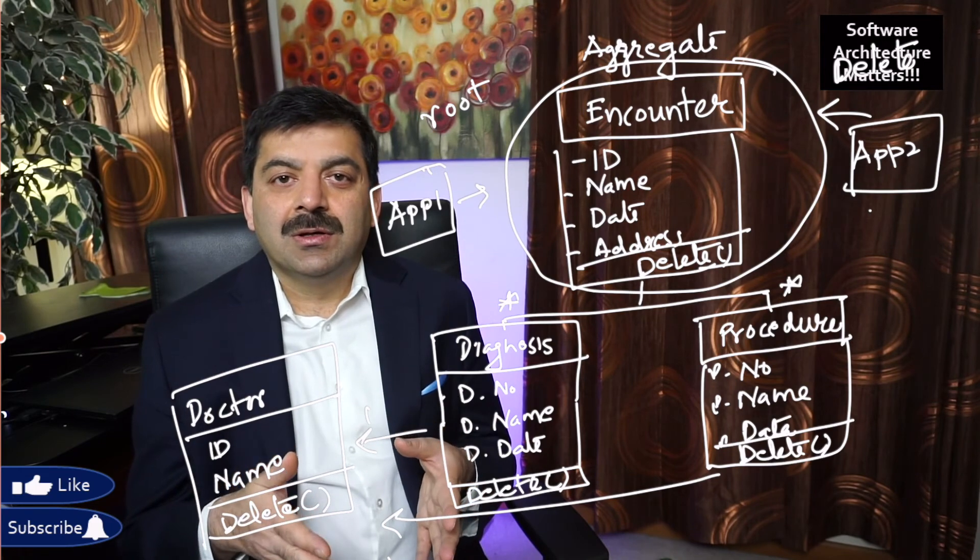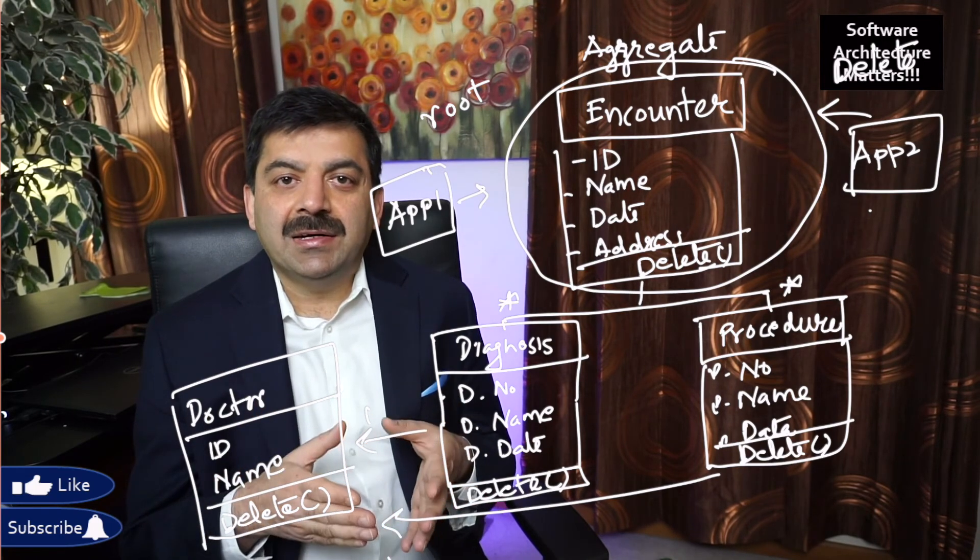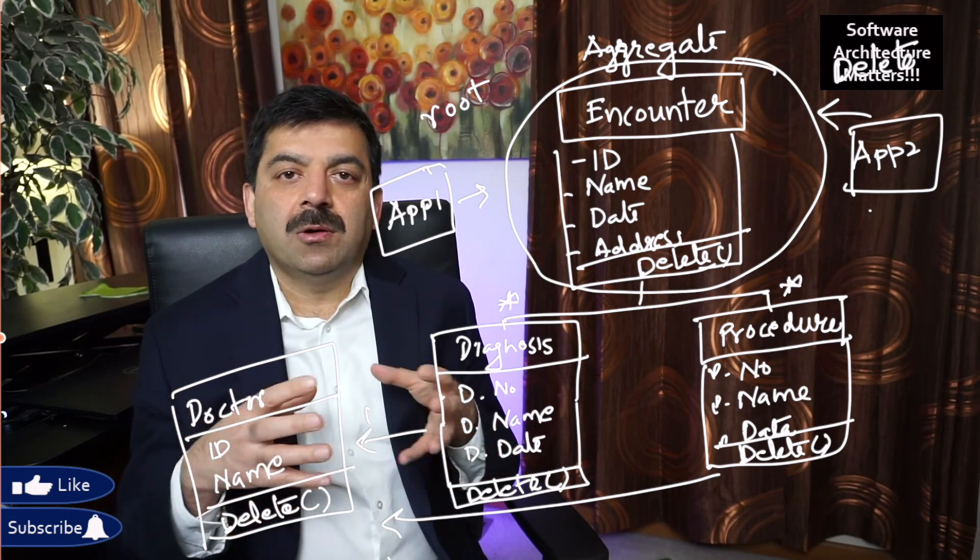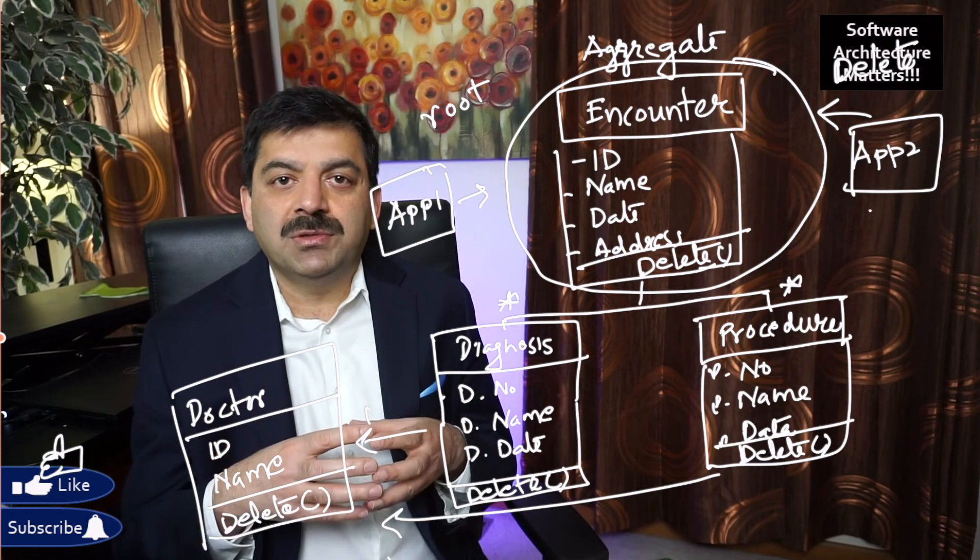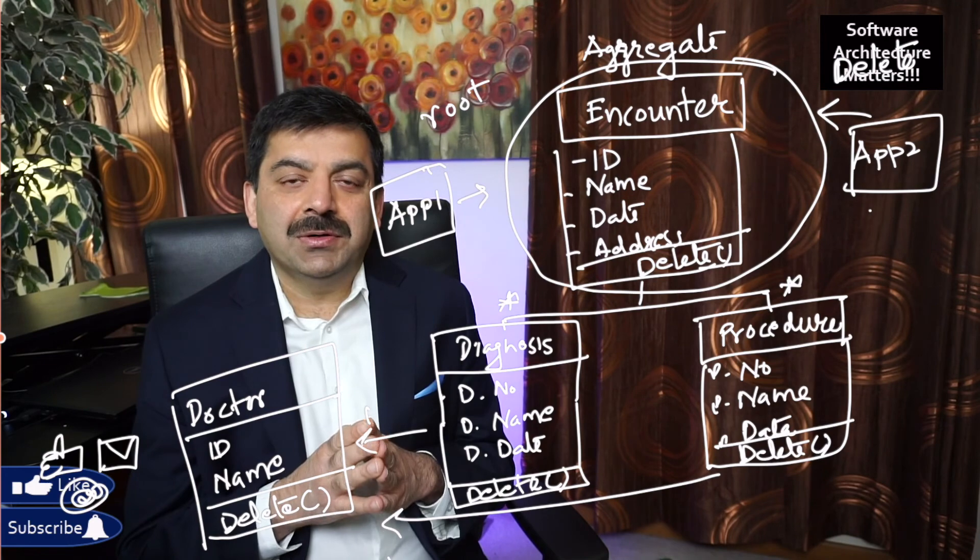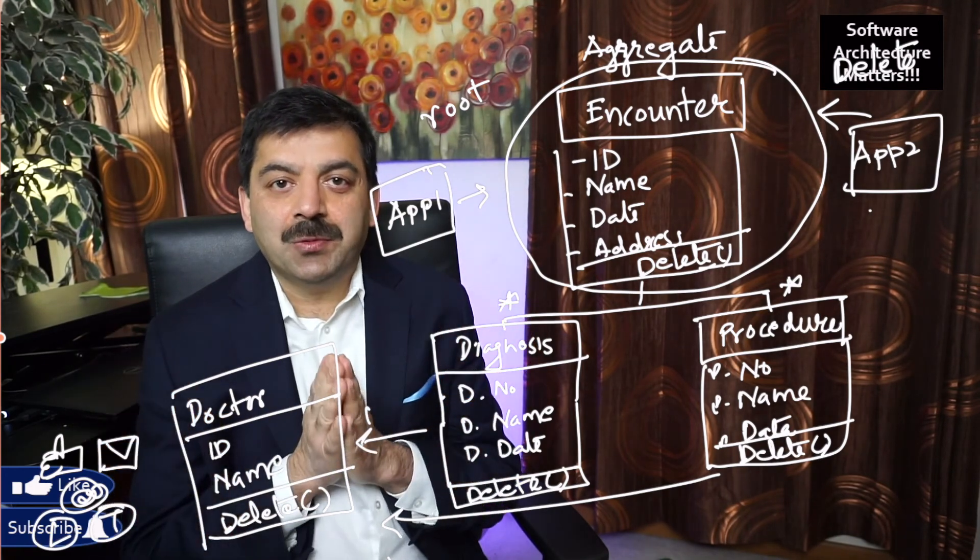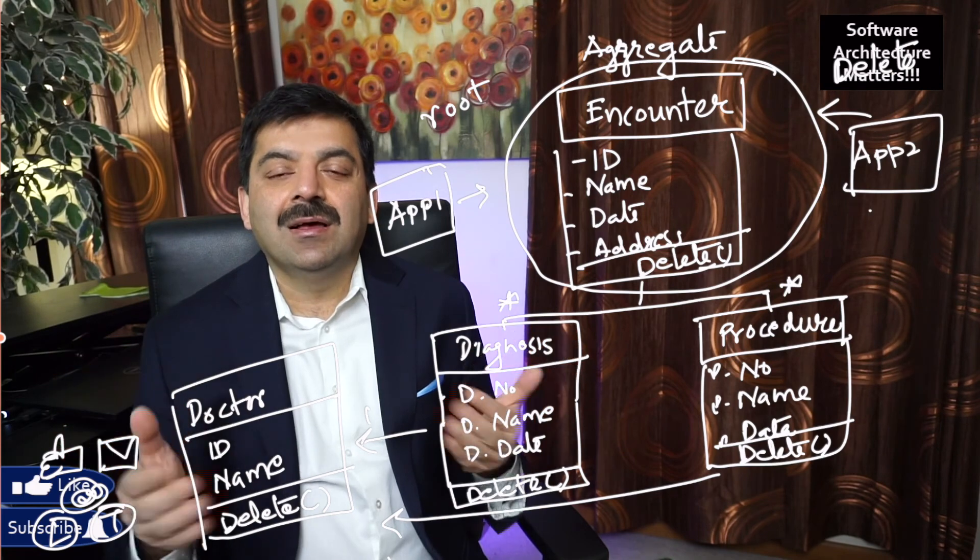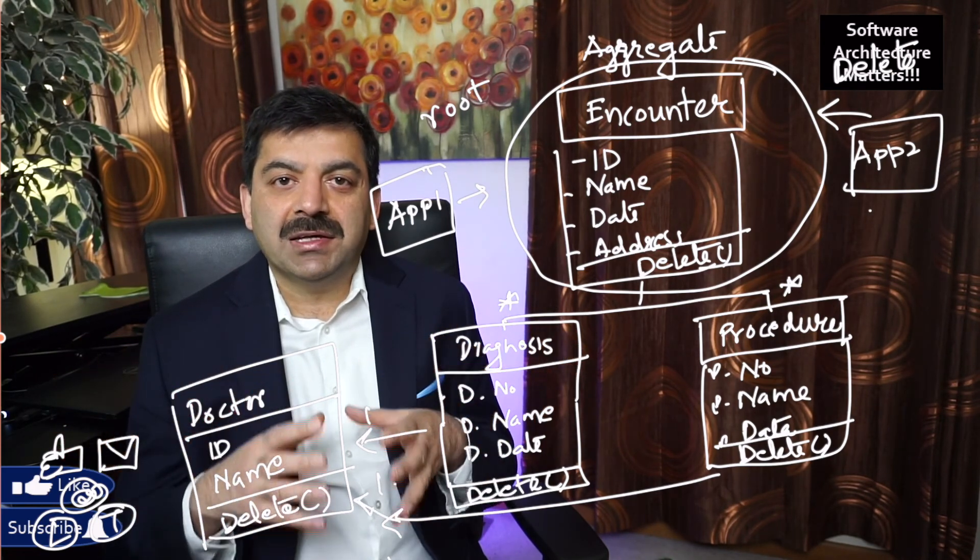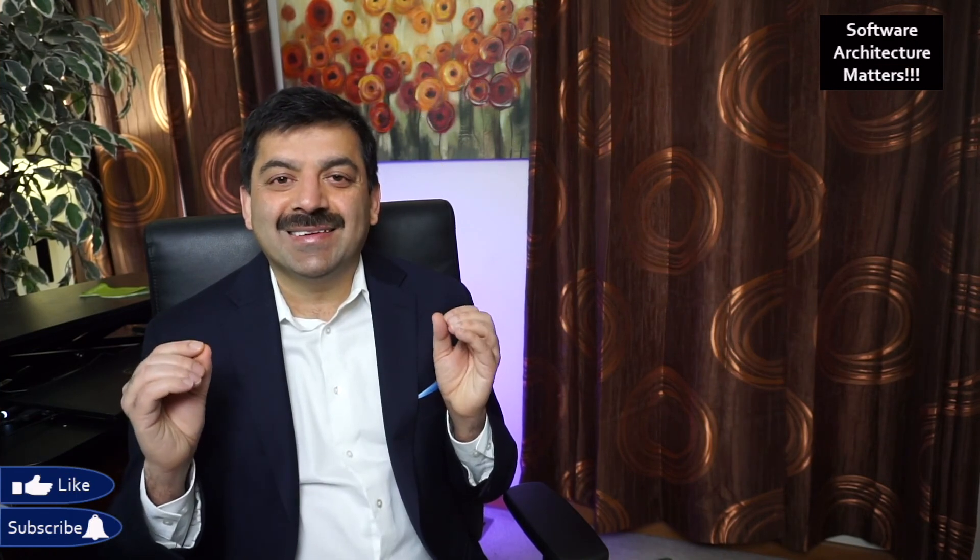So friends, we saw why we need aggregate. It is a mechanism by which we can club multiple objects in one object and treat them as one unit. So friends, thanks for watching this video. If you like this video, like it, share it, and subscribe to my channel for your regular updates. Also connect with me on LinkedIn and Twitter, especially LinkedIn. If you like small summaries of the video, I will be posting a lot of small summaries of the video on LinkedIn. Thanks again.